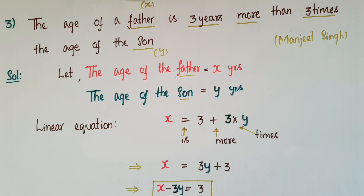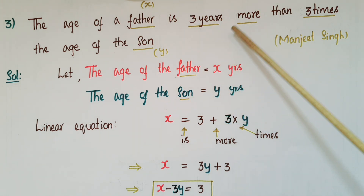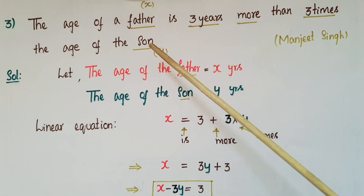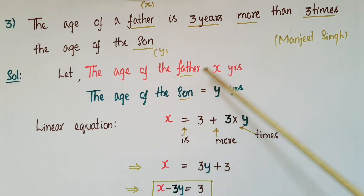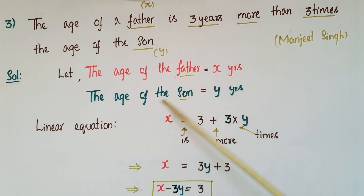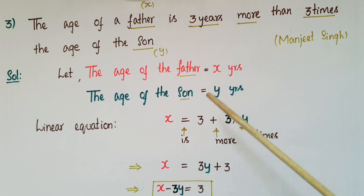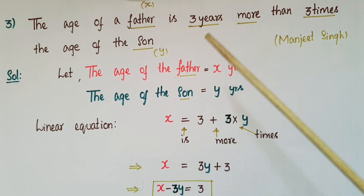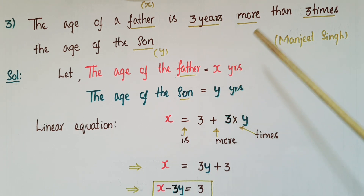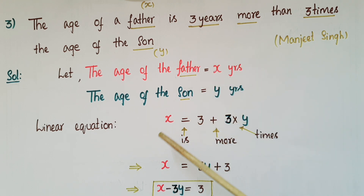Here is another statement: the age of a father is three years more than three times the age of the son. Let the age of the father be x years and the age of the son be y years. The statement says the father's age is three years more than three times the age of the son.